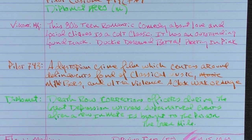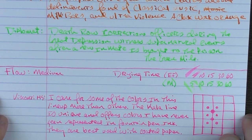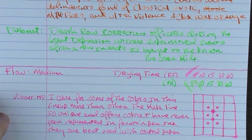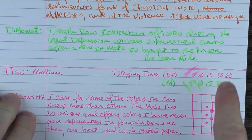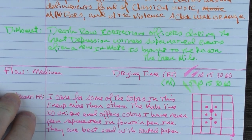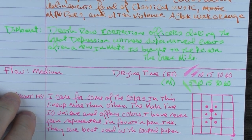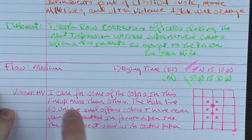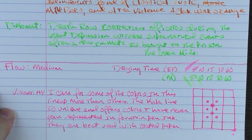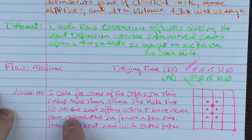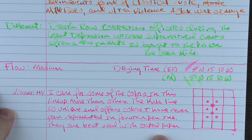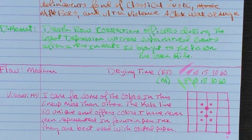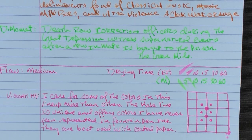In regard to the flow, I find that this is a medium flowing ink. The drying time is rather quick on here. After five seconds on the extra fine it was pretty much dry and on the medium pretty much right after 10 seconds it was dry as well. I said that I care for some of the colors in this lineup more than others. The Kala line is unique and offers colors that I have never seen represented in fountain pen ink before. They are best used with coated paper and that's because they are a very pigmented ink. And what I'm going to do here is let's go ahead and do a water test.